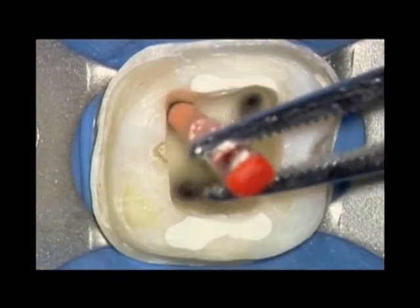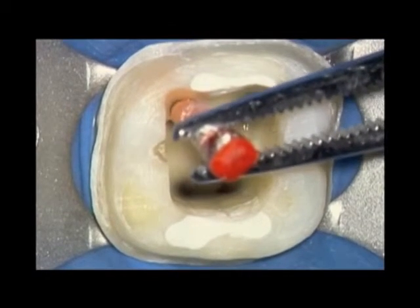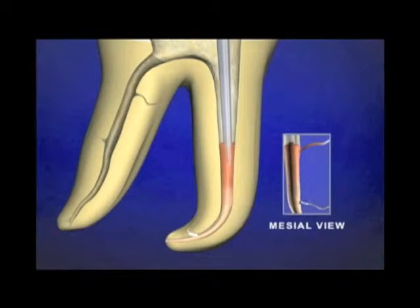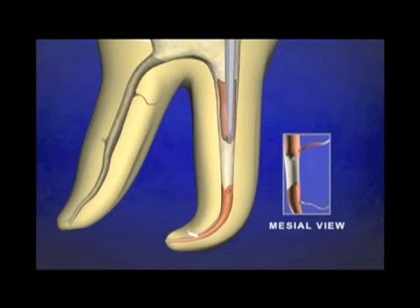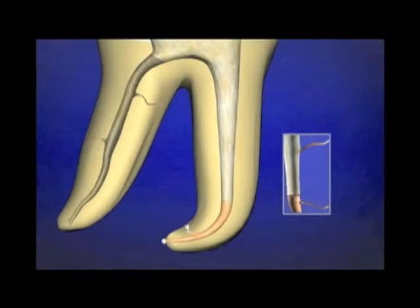Zooming in on a finished, shaped, and disinfected system: in the Schilder technique, the cone should slide to length, confirmed radiographically — it's our last chance to make adjustments. Notice the heat wave moving through the cone to the terminus. Warm gutta percha can be compacted with a pre-selected, pre-fit plugger, moving GP and sealer into the anatomy, corking the apical one-third. We would normally never put a post in the mesial systems, so we then need to backfill.